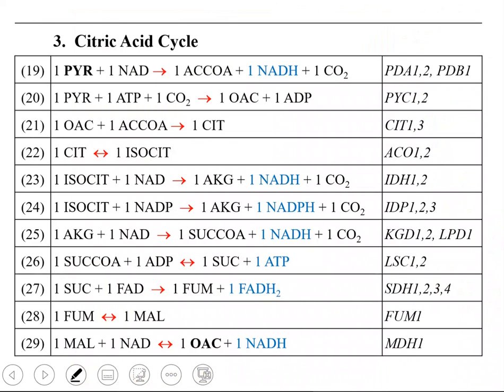Here you see the reaction list representation of the TCA cycle. It is also referred to as the citric acid cycle — it starts with citrate or citric acid. Again, you see NADH formations, FADH₂ formation, and ATP or GTP formation. This is the reaction list representation used for metabolic network simulations.